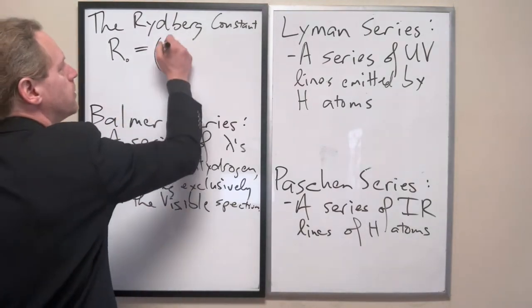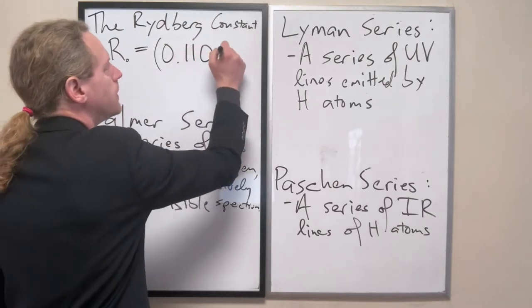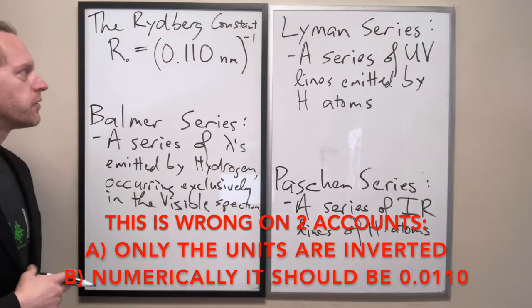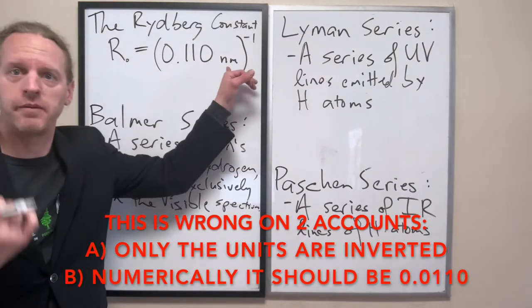It equals 0.110 nanometers, and that's all raised to the negative first. So the units for R naught are actually inverse nanometers.